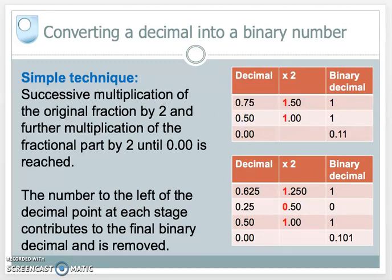We've reached the end, so the decimal fraction 0.75 can be represented by the binary decimal 0.11. Just to check, the first 1 represents a half, and the second 1 represents a quarter. A half plus a quarter equals 0.75, three quarters. Nice little technique.